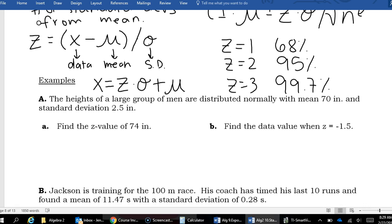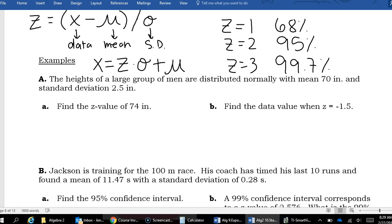So let's try some formulas in a couple of examples. The first one says the heights of a large group of men are distributed normally with mean 70 inches and standard deviation 2.5 inches. To find the Z value, I'm going to use this formula that you can see right at the top. We're going to substitute the X value in for the data value, 74, minus the mean was given to be 70 divided by the standard deviation 2.5.